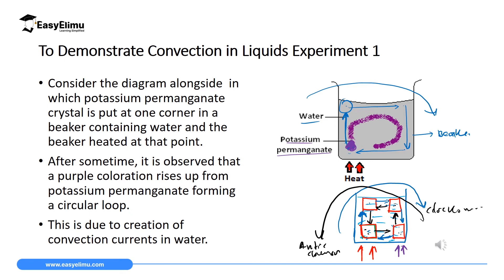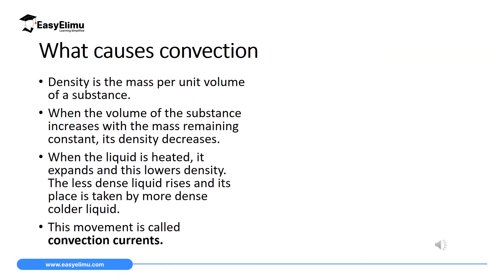This movement is what we call convection current. So what causes convection current? Convection is caused when a liquid is heated — it moves up — and the cold liquid at the top moves down. Let's remember what we discussed about density: density equals mass over volume. Let's take a liquid with a constant mass of 10 kilograms and three different volumes.